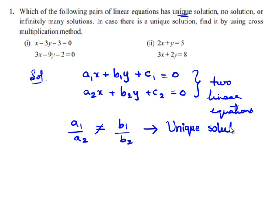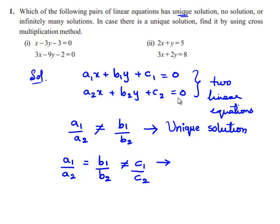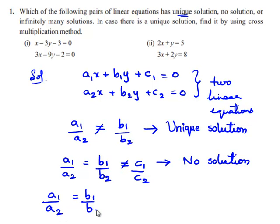This is the condition for unique solution. When a1/a2 = b1/b2 ≠ c1/c2, we say that the given set of linear equations has no solution. And when a1/a2 = b1/b2 = c1/c2, we say that the given set of linear equations has infinitely many solutions.